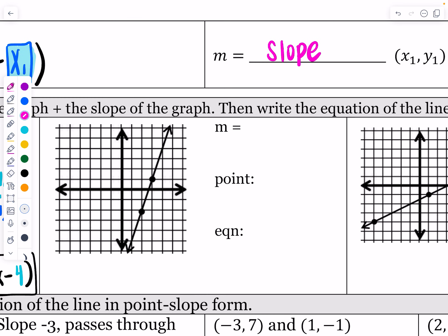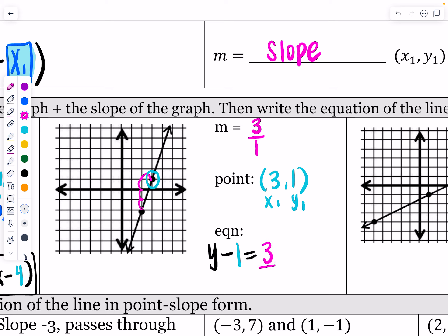On the next one, let's count rise over run. We rise three and run one to the right — so slope is three over one, a positive slope. I'll randomly choose the point (3, 1) as x1, y1. The equation is: y minus 1 equals three over one — you can write it as just 3 — times (x minus 3).